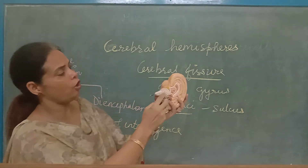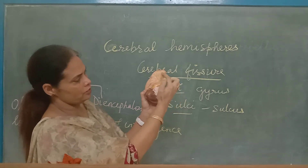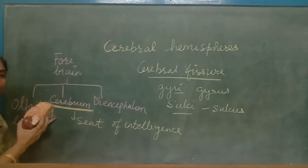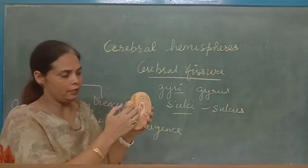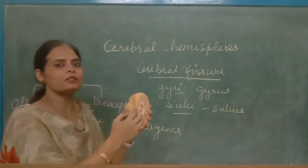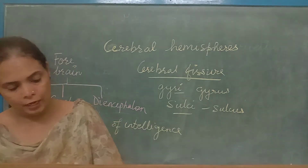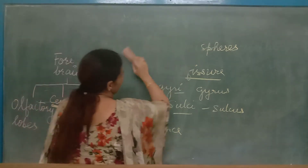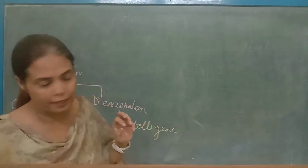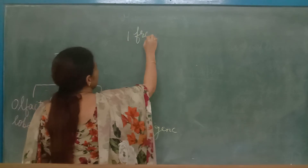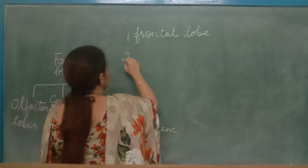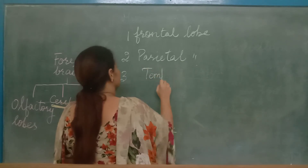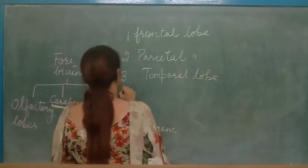You can see the olfactory lobes — the yellow colored structures. They send the reflex actions and auditory reflections from the receptors to the forebrain. The cerebrum is divided into four lobes: number one is the frontal lobe, number two is the parietal lobe, number three is the temporal lobe, and number four is the occipital lobe.